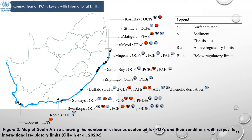This is a map of South Africa showing the number of estuaries evaluated for POPs and their conditions with respect to international regulatory limits. Out of the 290 estuaries present in the country, only 12 have been evaluated for POPs. Letters A, B, and C represent surface water, sediment and fish tissue respectively — red indicates POPs levels above international regulatory limits, blue indicates below. OCPs in fish tissues from Kosi Bay and St. Lucia estuaries exceeded the MRL of the European Commission, indicating a cause for concern. Levels of OCPs in sediment from Umgeni River were below international regulatory limits, while levels of PCBs and PAHs in surface water from Buffalo River were above international regulatory limits.